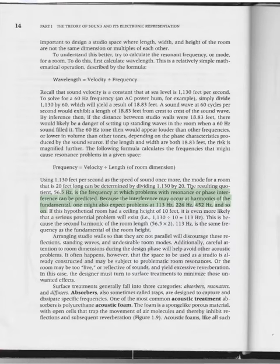The following formula calculates the frequencies that might cause resonance problems in a given space: frequency equals velocity divided by length of room dimension. Using 1,130 feet per second, the mode for a room that is 20 feet long can be determined by dividing 1,130 by 20. The resulting quotient, 56.5 Hz, is the frequency at which problems with resonance or phase interference can be predicted. Because the interference may occur at harmonics of the fundamental, one might also expect problems at 113 Hz, 226 Hz, 452 Hz, and so on. If this hypothetical room had a ceiling height of 10 feet, it is even more likely that a serious potential problem will exist—1,130 divided by 10 equals 113 Hz. This is because the second harmonic of the room length is the same frequency as the fundamental of the room height. Arranging studio walls so they are not parallel will discourage these reflections, standing waves, and undesirable room modes.